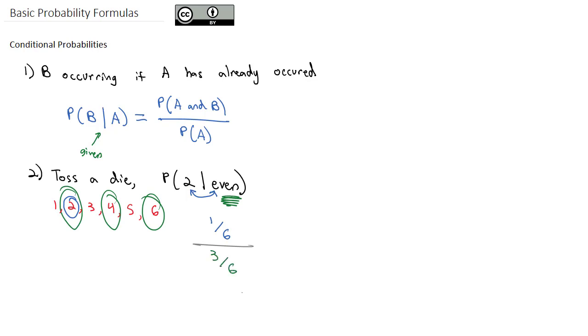So we're going to take one-sixth divided by three-sixths. To make this easier on the calculator, the divide by six can reduce out, so it's really one over three. And if we do one-third on the calculator, we get a probability of 0.33333.